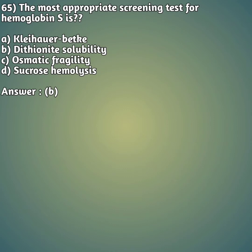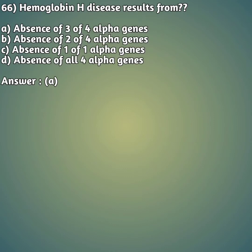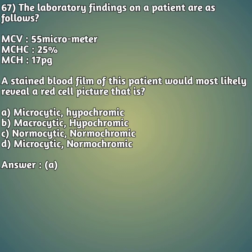Moving to our 66th question: hemoglobin H disease results from - option A: absence of three of four alpha genes. Option B: absence of two of four alpha genes. Option C: absence of one of four alpha genes. Option D: absence of all four alpha genes. The right answer is answer A - absence of three of four alpha genes causes hemoglobin H disease.